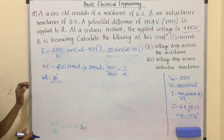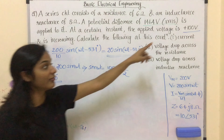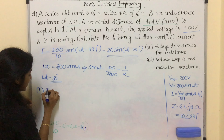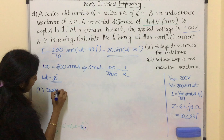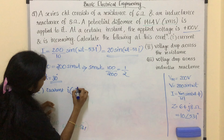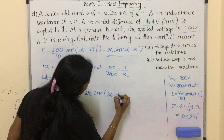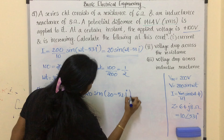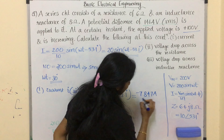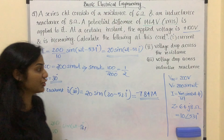Knowing the value of ωt, we substitute to get the current when the applied voltage is 100 volt. i = 20 sin(30° - 53.1°) = -7.847 amperes. This is the value of current when the applied voltage is plus 100 volt.